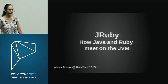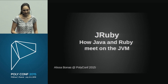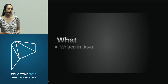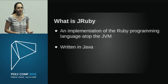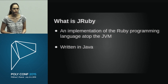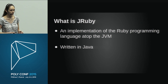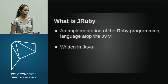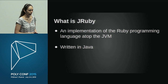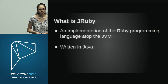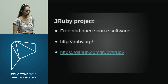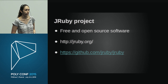Let's dive in and do this background on what is JRuby. JRuby is one of the implementations of the Ruby programming language — the implementation that runs on top of the JVM, and it's also developed in Java. It is a free and open source project, which I find very important. This is the website and the GitHub source repo for the project.